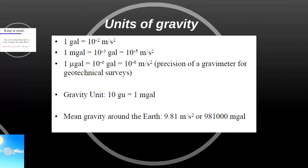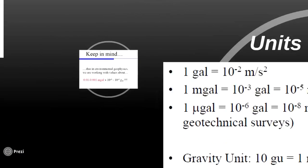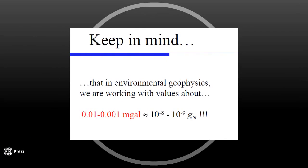The units of gravity are very important. There is a table that we have to always keep in mind. The gravity unit: 10 gravity units is equal to 1 mG. Keep in mind that in environmental characteristics, we are working with very, very small values and we always have to remember it.